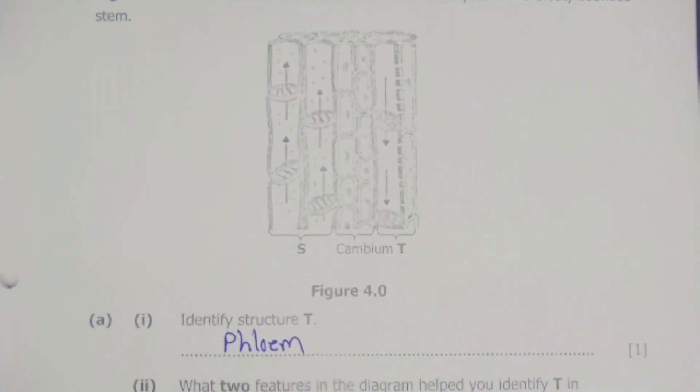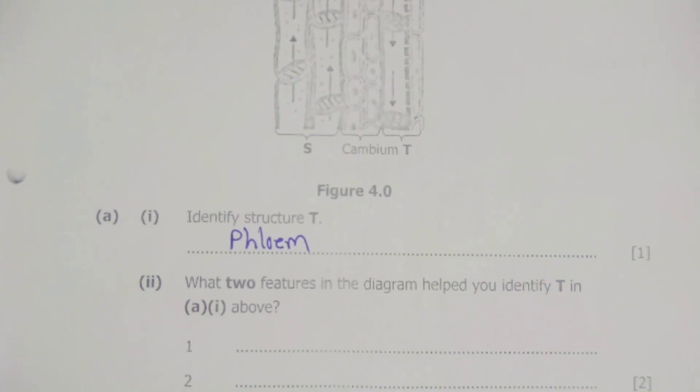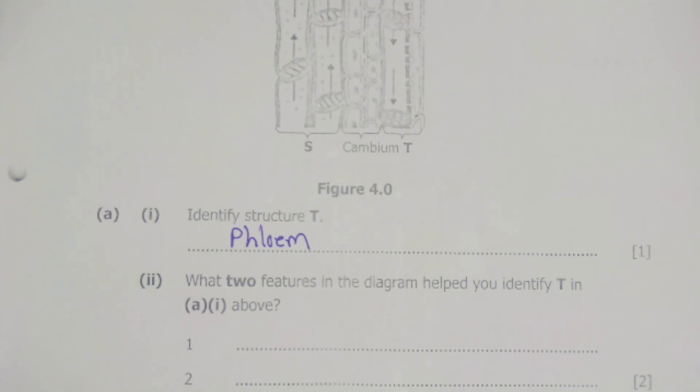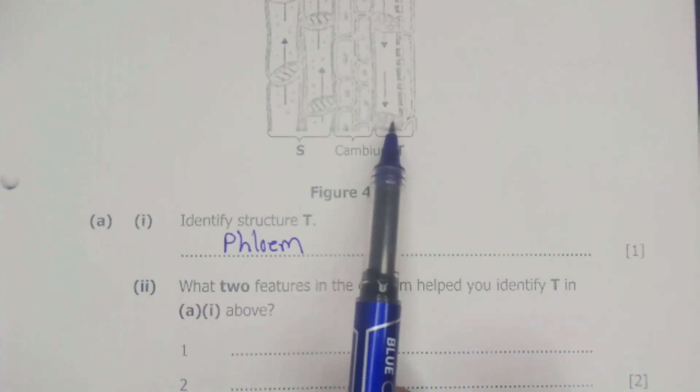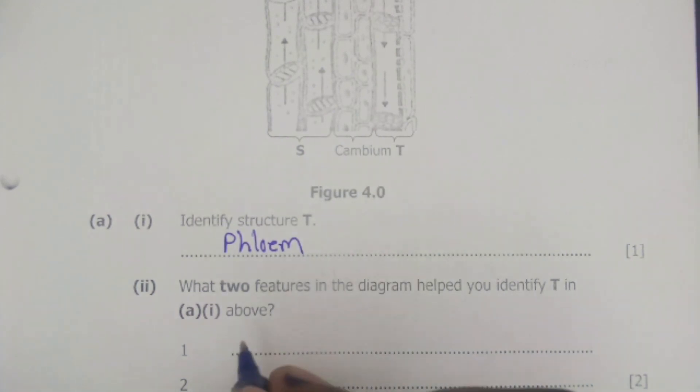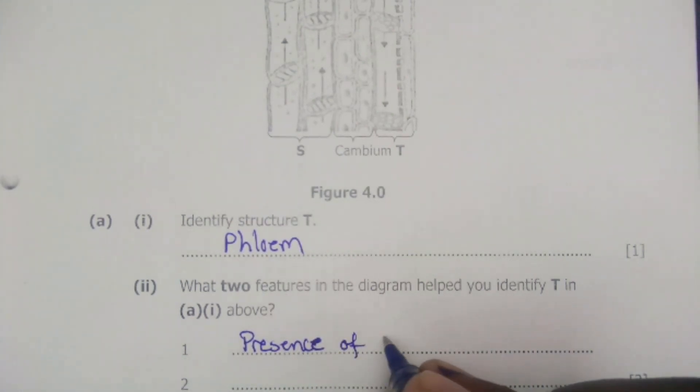Let's now look at the next question. Question number A2 says, what two features in the diagram helped you identify T in A1 above? For us to identify this one as the phloem, we have the sieve plates here. So that is our first feature. We can say presence of the sieve plates.